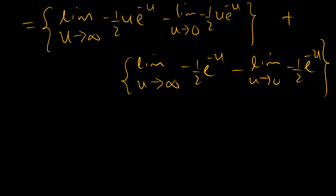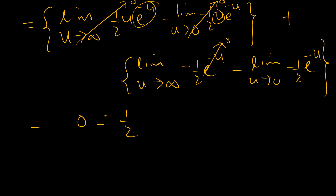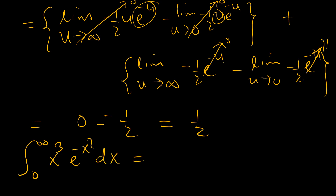It's easy to see that as u tends to infinity, the term negative one-half u e to the power negative u tends to 0, and negative one-half e to the power negative u also tends to 0. As u tends to 0, the term with u goes to 0. We are left with 0 minus negative one-half, since e to the power 0 is 1. This equals positive one-half. So our integral from x equals 0 to infinity of x cubed times e to the power negative x squared is one-half.